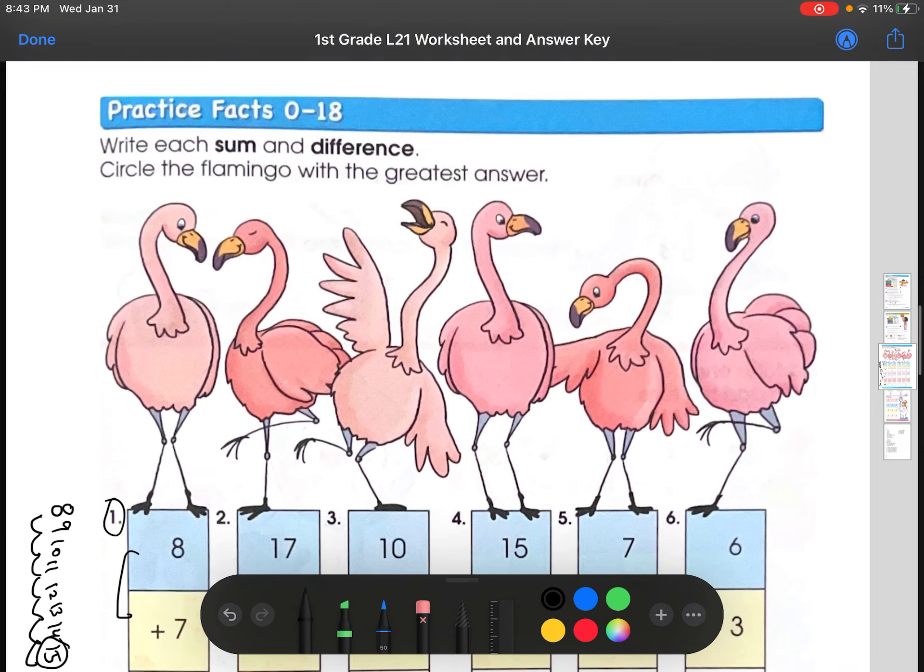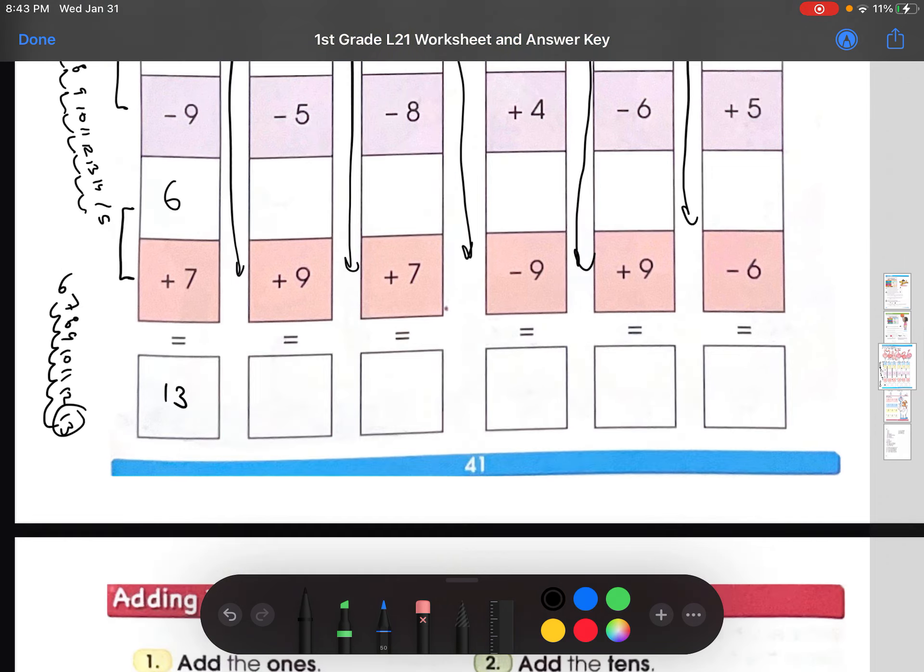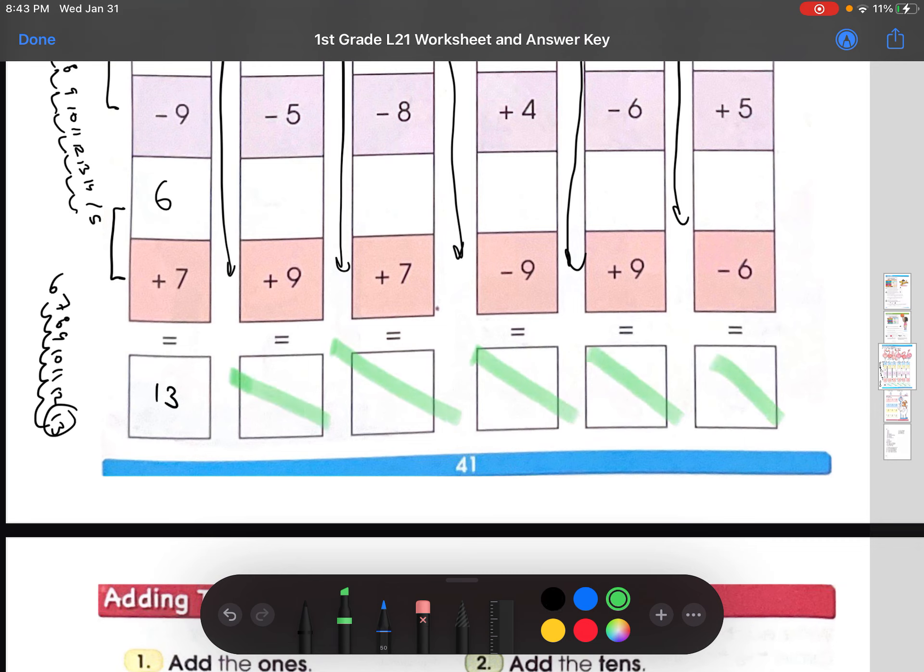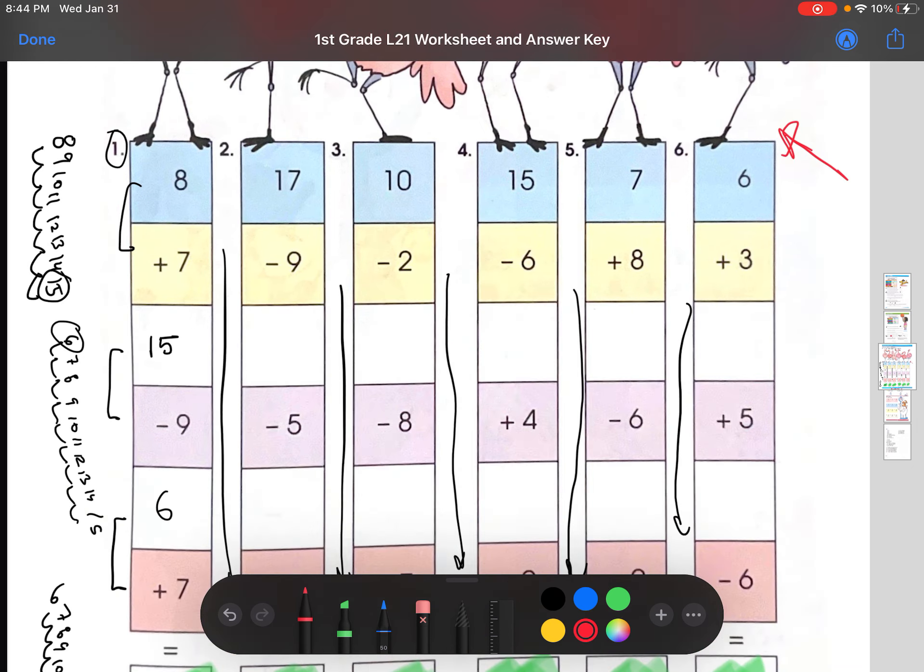And basically, that's the first step. And right here, the second step is to circle the flamingo with the greatest answer. And you would do that by solving all of these down, every single one of these. And then, once you get all these answers right here, just like this 13, once you get an answer for all these boxes, you're going to see which one is the biggest number. We're going to find the biggest number. And then you would circle the flamingo that corresponds. All right. Let's move on.